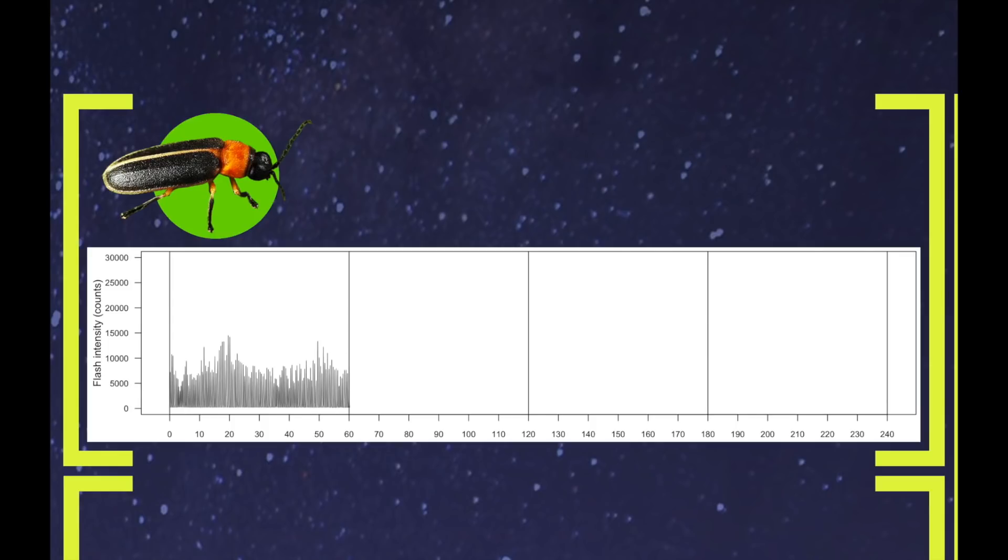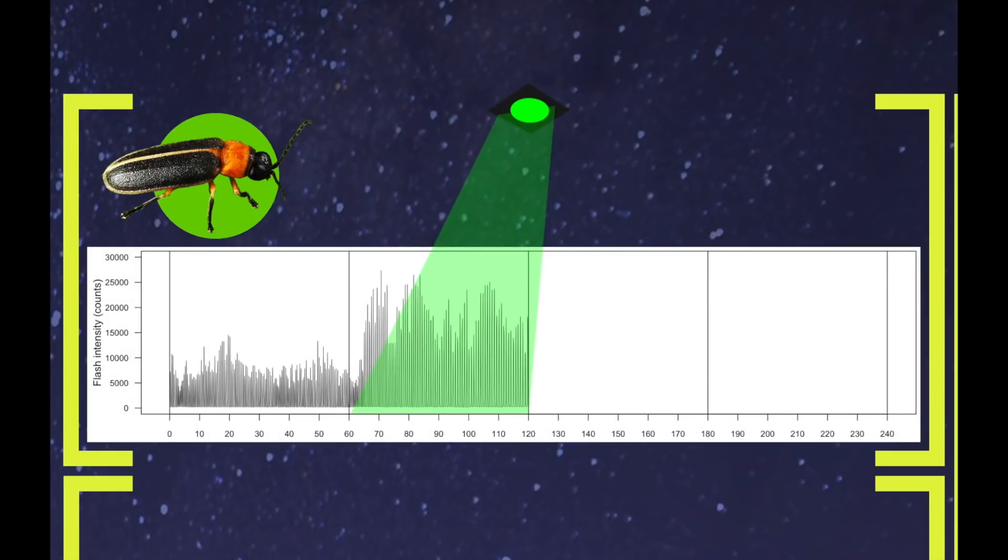And then I added a little bit of dim green light. And all of the sudden, you see him flash a lot more brightly. Flash, flash, flash. We turn the light out, and he slowly goes back to normal.